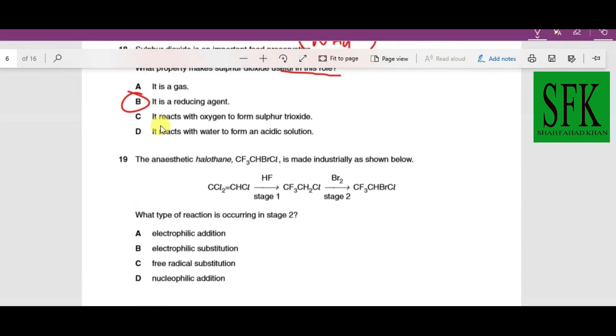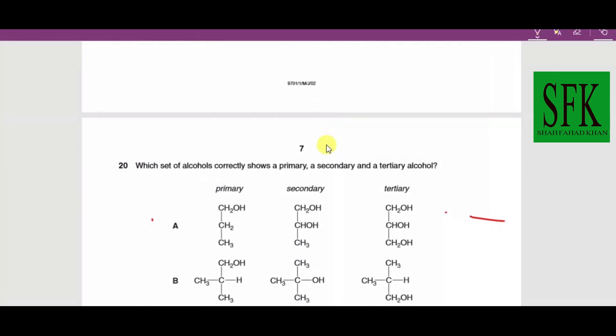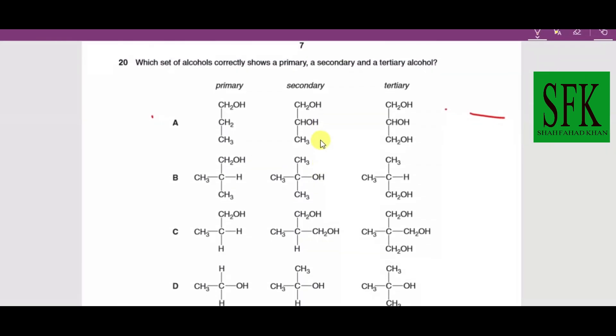The anesthetic halothane can be industrially prepared through this pathway. Which type of reaction is occurring in stage two? If you look at stage two, one of the hydrogen atoms has been substituted by a bromine atom. This is free radical substitution because the hydrogen atom is being replaced by the bromine atom.